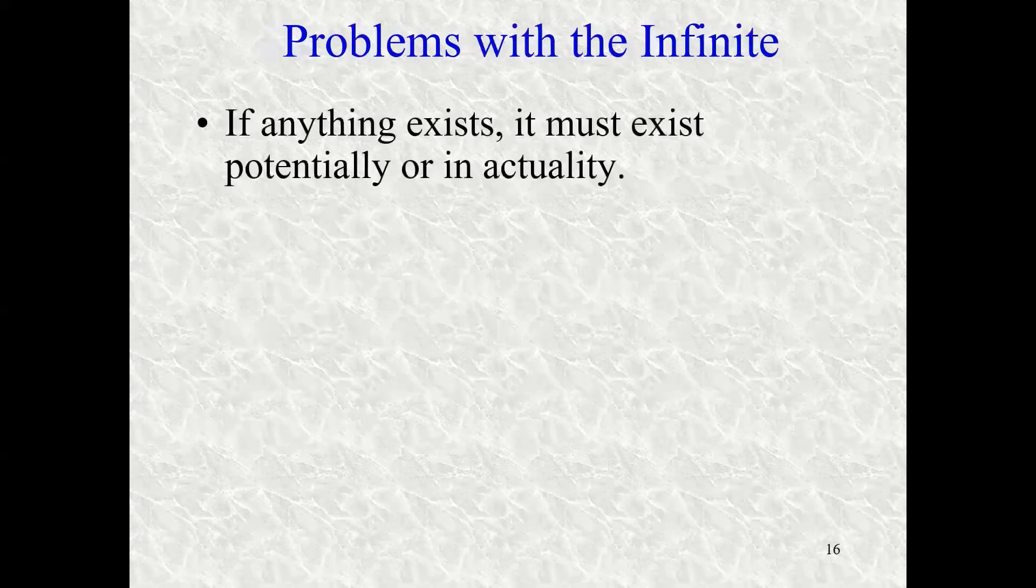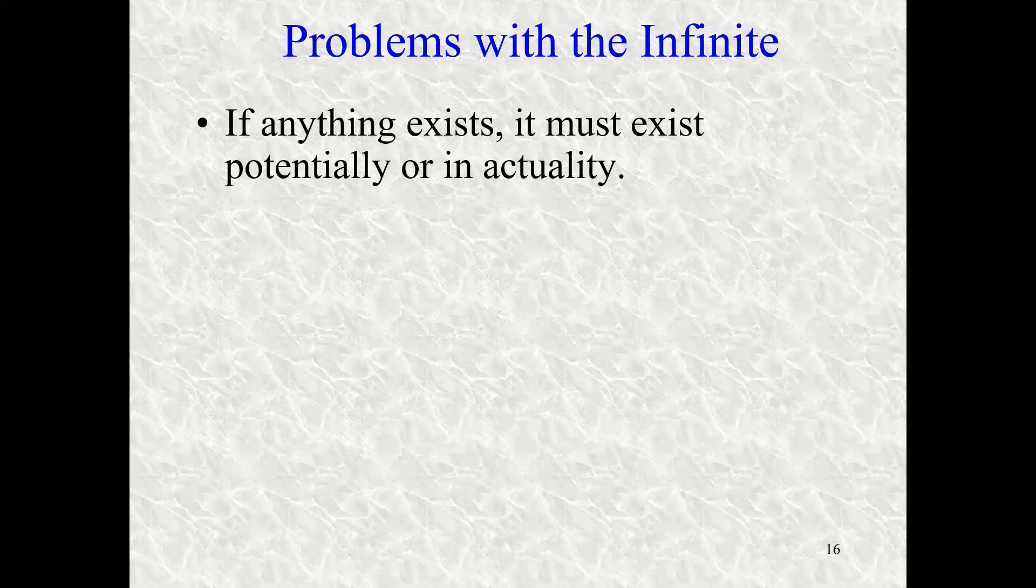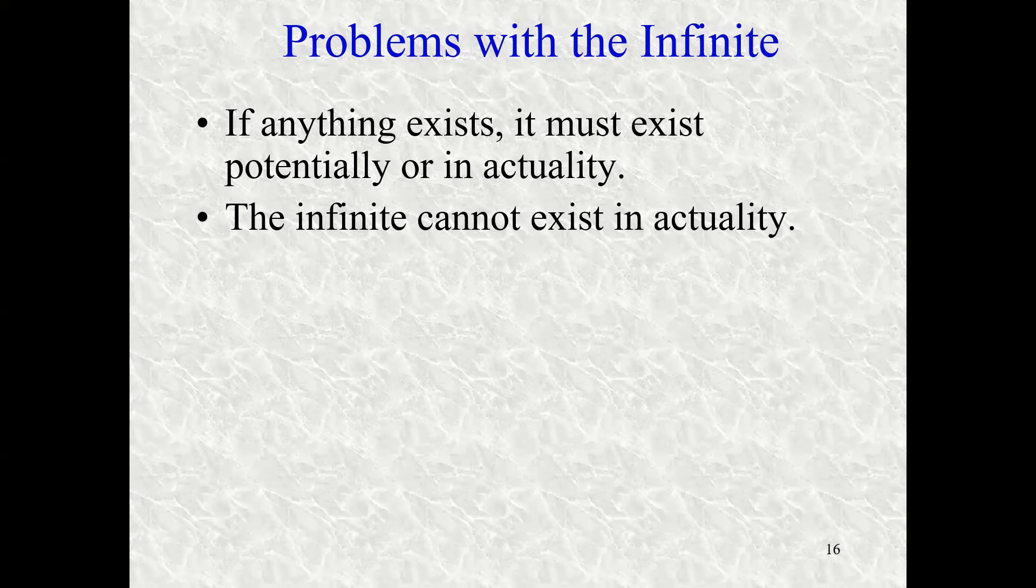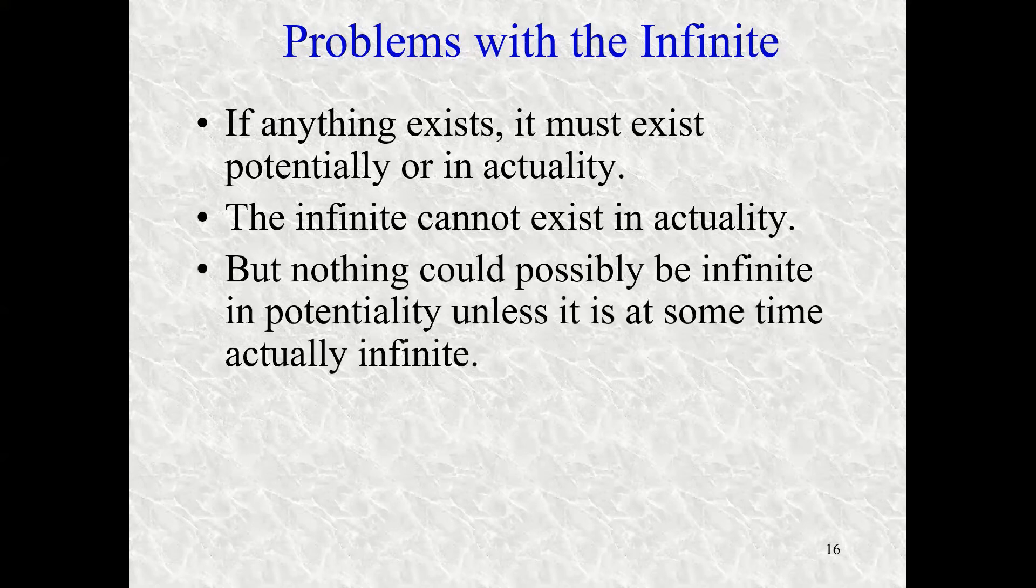So putting these problems together, if anything exists, it has to exist either potentially or in actuality. Those are the only two ways that anything can exist for Aristotle. But the infinite can't exist in actuality for the reasons we've already said, the arguments that we just presented. But nothing could possibly be infinite in potentiality unless it is at some time actually infinite.